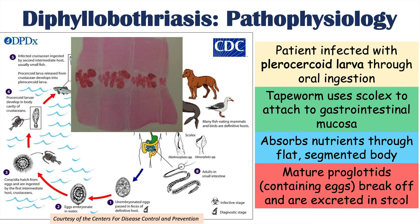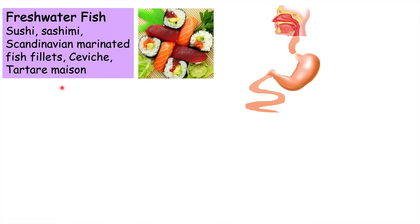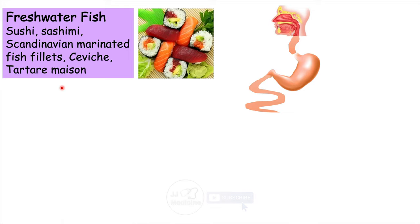The proglottids of Diphyllobothrial species are wider than they are long, and inside each proglottid you can see packets of eggs. These proglottids break off from the main chain of the tapeworm and are released in the patient's stool as unembryonated eggs, continuing the life cycle. A patient is typically infected by consuming freshwater fish in dishes such as sushi, sashimi, Scandinavian marinated fish fillets, ceviche, or tartar maison — all dishes containing raw or undercooked fish.